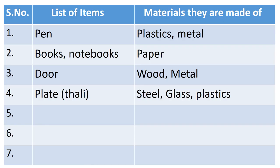Let's take a few examples. Number 1: Pen — it is made up of plastic, and some pens are even made up of metal. Number 2: Notebooks — yes, they are made up of paper. In the same way, you are requested to list down the materials along with the items.